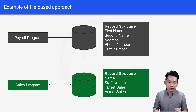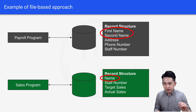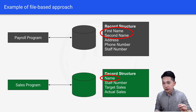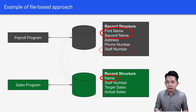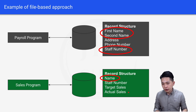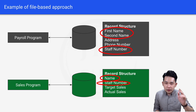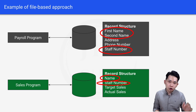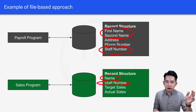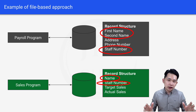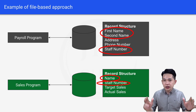What kind of issues might we face? First name and second name mean the same thing as name, but they are stored differently. Also, staff number is stored in the first file and also in the second file, but they are not linked to each other. So if you update the staff number, you'll most probably update only one file and forget the other, which causes data inconsistency and lack of data integrity.